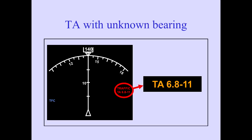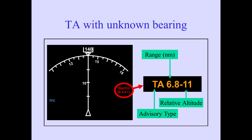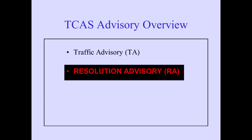If TCAS cannot determine the bearing to the intruder, a message on the ND provides distance to the intruder and data tag information, if available. The TA symbol will not be displayed. In this example, TCAS cautions of an intruder at 6.8 nautical miles, 1,100 feet below you, and climbing. Next, we'll discuss the Resolution Advisory, known as an RA.